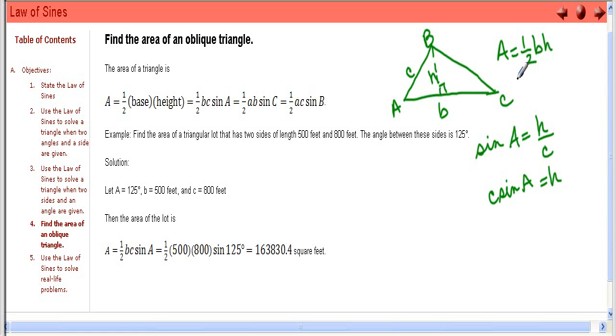So, we can plug it into the formula that we have: 1 half times the base times the height, which is C times sine of A. And that is another way that we can write the area of an oblique triangle.